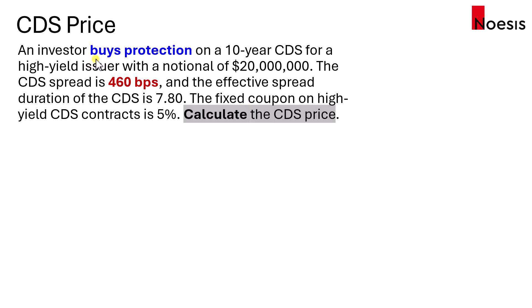In this example, an investor buys protection on a 10-year CDS for a high-yield issuer with a notional of $20 million. The CDS spread is 460 basis points or 4.6%, and the effective spread duration of the CDS is 7.8. The fixed coupon on high-yield CDS contracts is 5%. Calculate the CDS price.